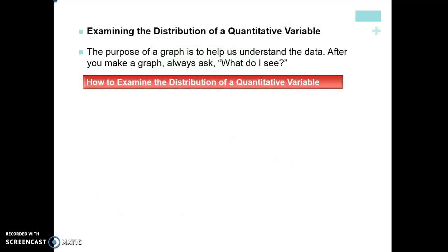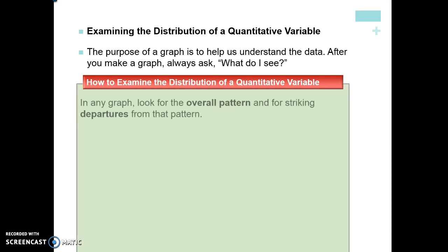What exactly does it mean to examine the distribution of a quantitative variable? When you look at a graph you want to say, what do I see? What is this graph telling me? Number one, you want to look for the general overall pattern. What does my graph look like? Where is most of my data clustered? And are there any major departures from that pattern? Is there something that's really crazy and kind of out there that doesn't really fit with the rest of the data? You would actually then try to think, okay, why is that data point so far away from everything else?